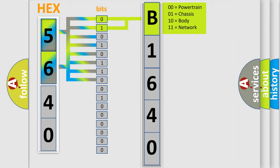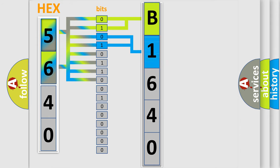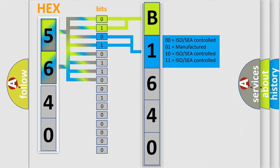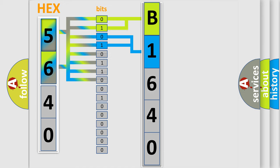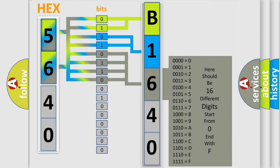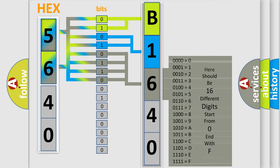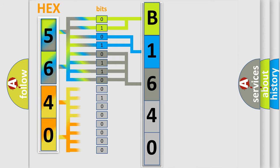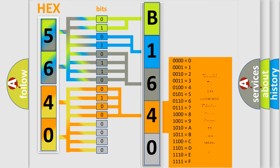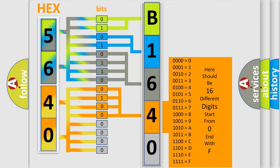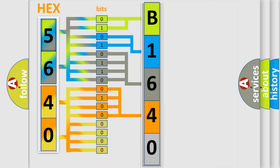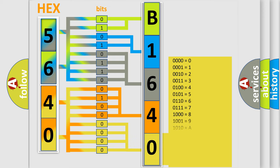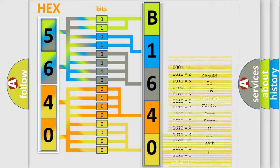By combining the first two bits, the basic character of the error code is expressed. The next two bits determine the second character. The last four bits of the first byte define the third character of the code. The second byte is composed of eight bits: the first four bits determine the fourth character, and the last four bits define the fifth character. A single byte conceals 256 possible combinations.